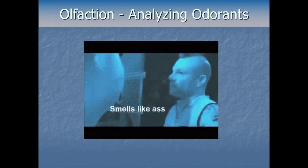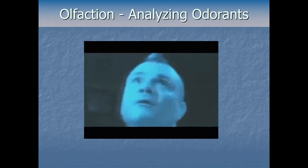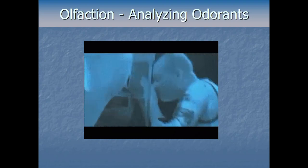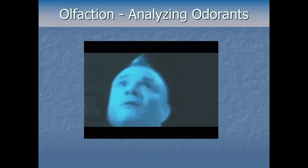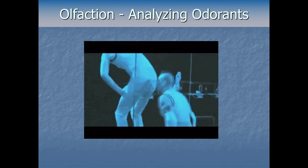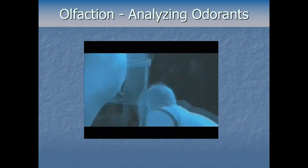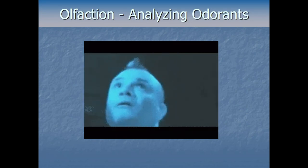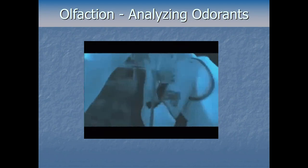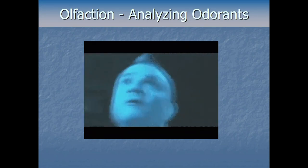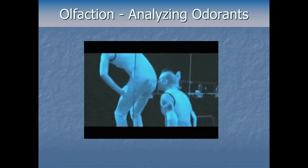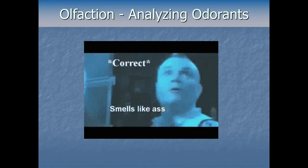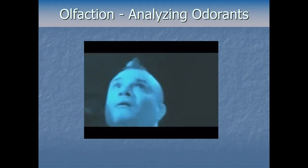This video dives deeper into olfaction. Odorants are the molecules that float through the air and land in our nose, activating our sensory neurons for smell. When you cook bacon, certain odorants waft through the air. Even unpleasant smells work by molecules coming off an object, traveling through the air into our nose — those molecules activate our smell-based neurons.